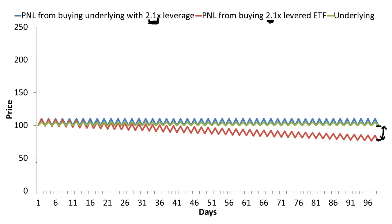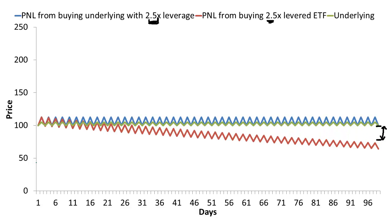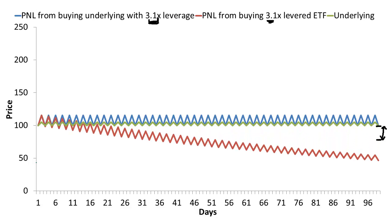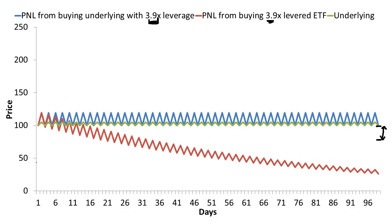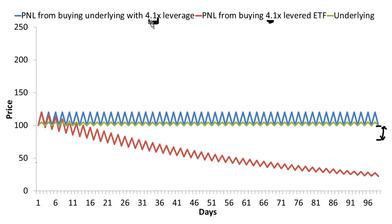As I continue to increase the amount of leverage in the ETF, the amount of discrepancy is increasing and increasing. Until when I get to a theoretical 4-times levered ETF, I can see that the discrepancy between levering up the underlying 4-to-1 myself and buying a theoretical 4-to-1 levered ETF is enormous. The point is that the discrepancy between buying a levered ETF and levering up the underlying yourself is dependent upon how levered you are.